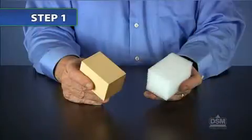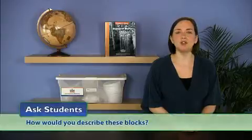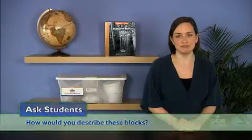To begin the activity, give each group of four a block of wood and a block of foam and tell the students to examine them carefully. Ask students, how would you describe these blocks? Students may suggest that one is wood and one is foam, that the objects are blocks, or that they are solid.